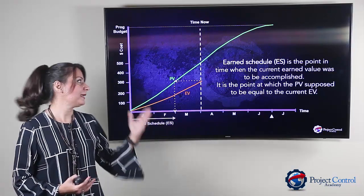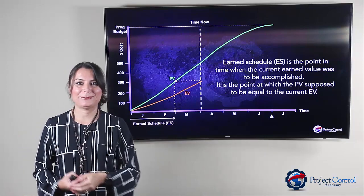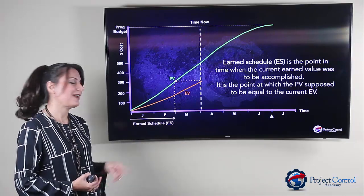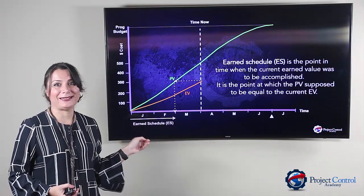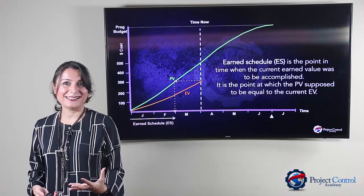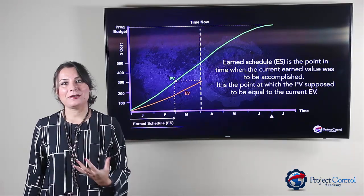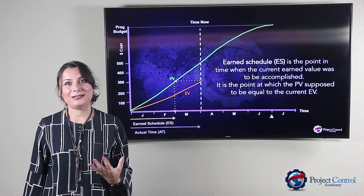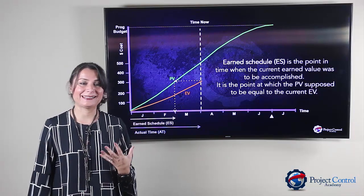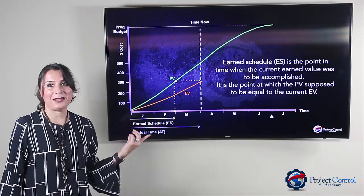So based on that, can you tell me what is the Earned Schedule in this example? That's right, it's two months. It was straightforward. However, calculating Earned Schedule is not always as easy as it was shown in this example.